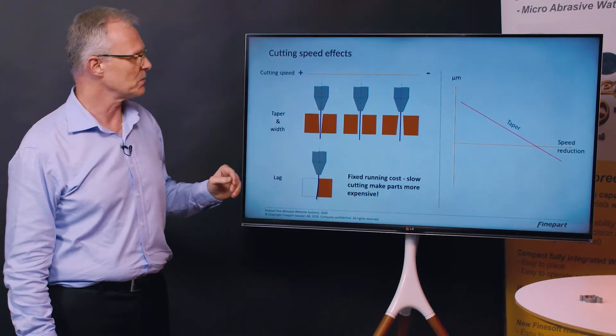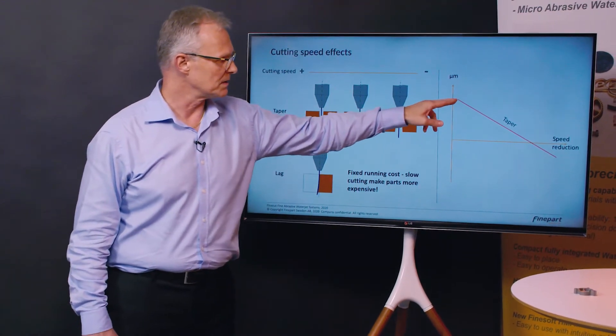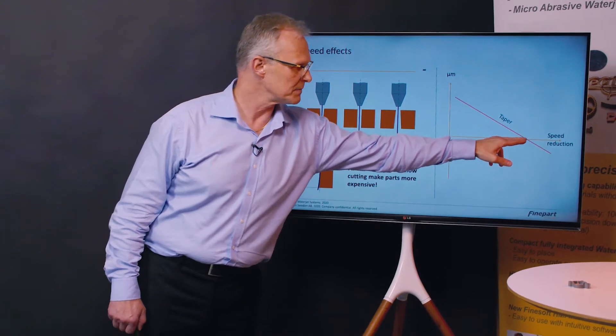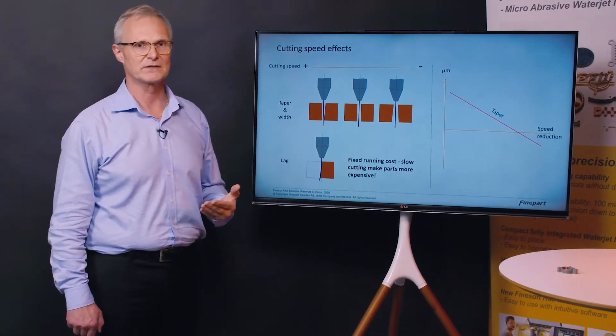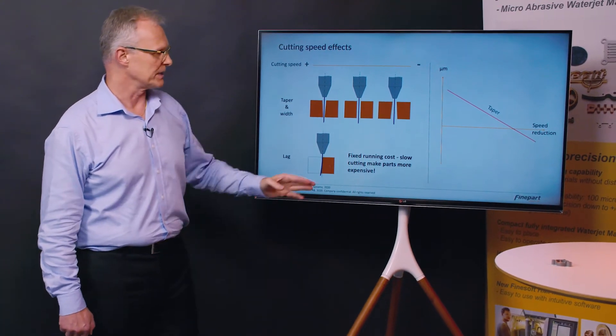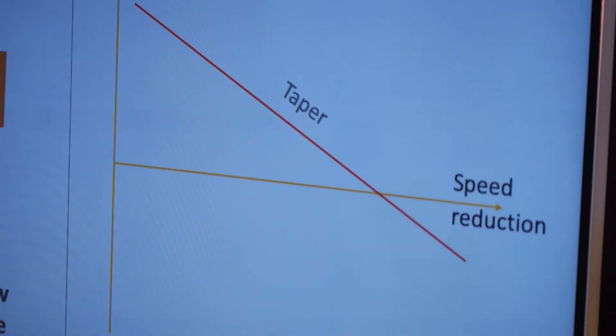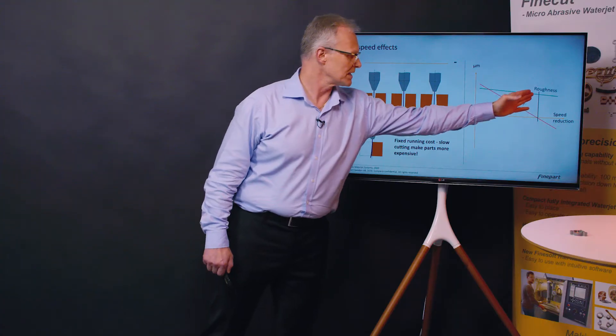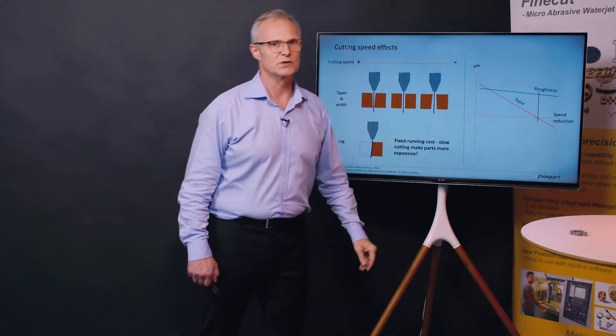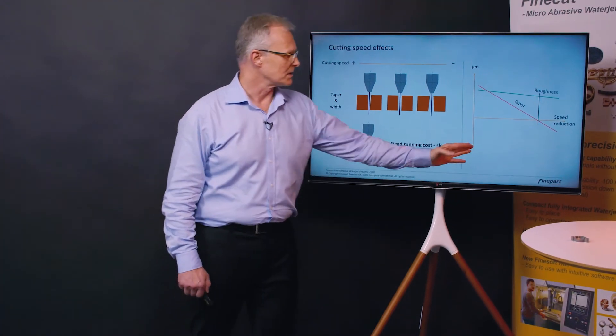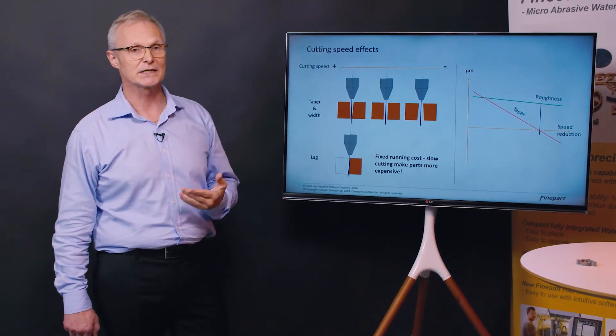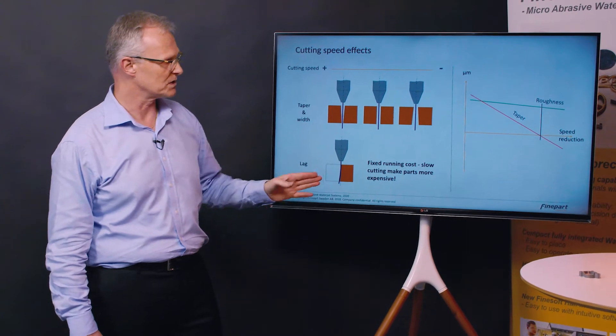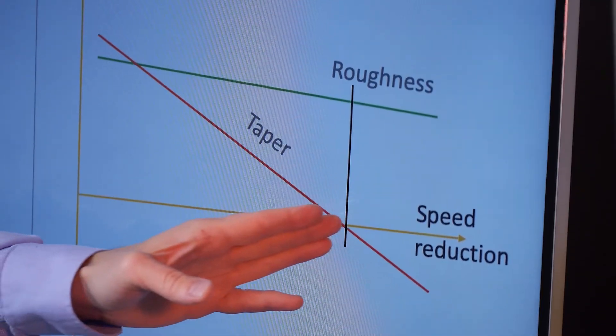If we go down in cutting speed we will reduce the taper and at some instance we will have parallel walls on both sides of the cut and we will even get negative taper. To get a really good part in micro abrasive waterjet cutting we want to go to a speed where we have no taper. If we have a three axis machine we have to reduce the speed significantly to reach this point.